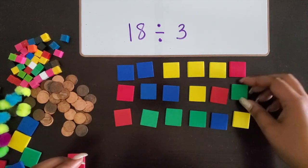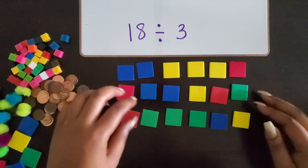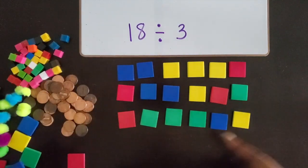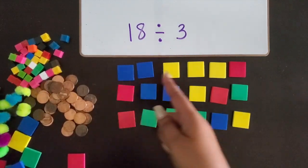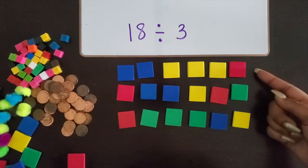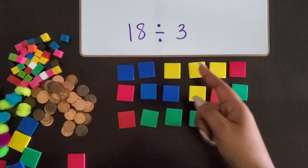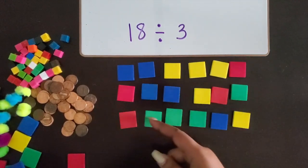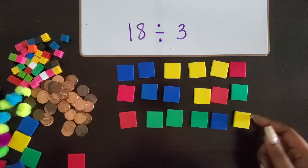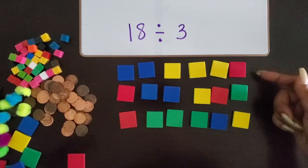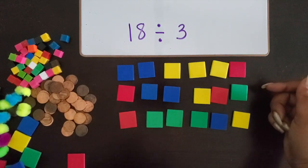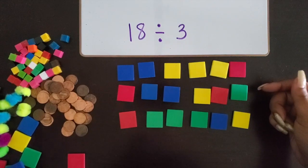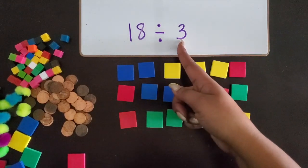My rows are all equal — they have the same amount. I have three groups, so now I can count how many are in each group: 1, 2, 3, 4, 5, 6. Each row has six items in it.